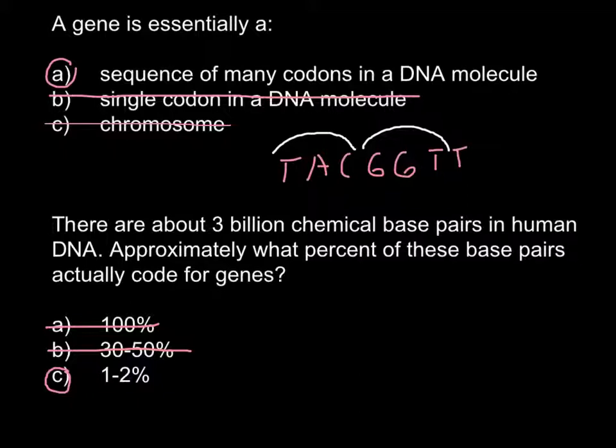It doesn't mean that 98% is not essential for our life, because there are many regulatory sequences, and also a large number of RNAs that are never translated into proteins and serve in the organism as RNA — for example, ribosomal RNAs or tRNA.